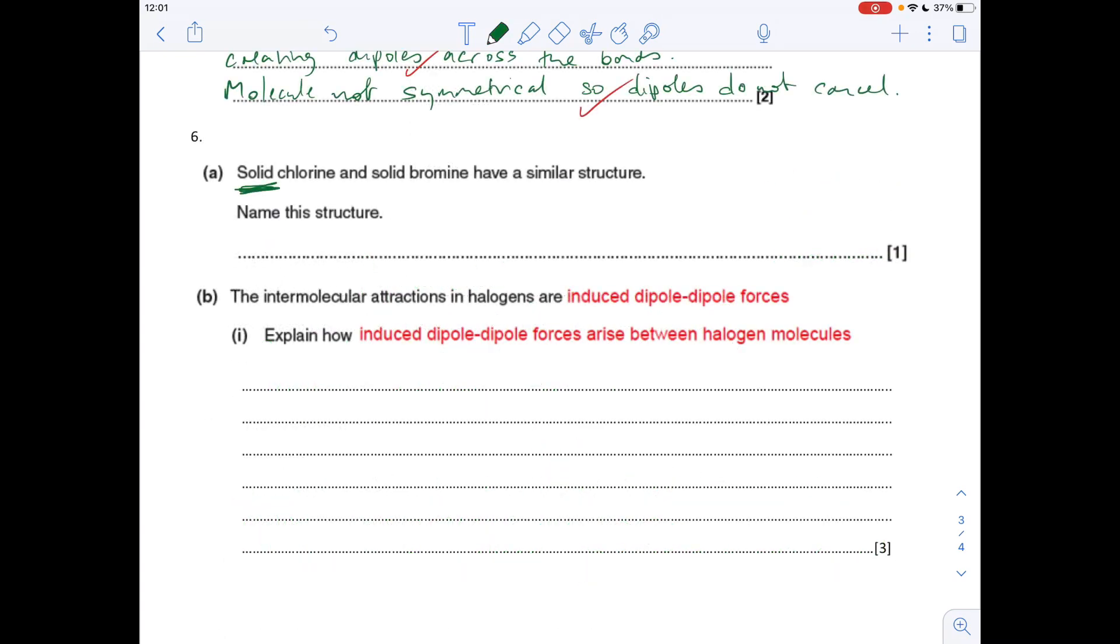Question six. You'll see I've underlined solid. Solid chlorine and solid bromine have a similar structure. All solids have a lattice structure. We hopefully know that chlorine and bromine, because they're simple molecules, they have a simple molecular structure. So the answer will be simple molecular lattice.